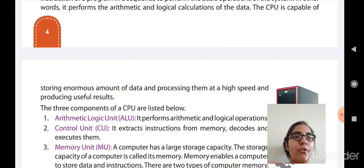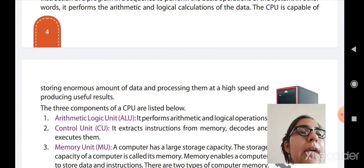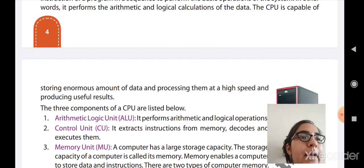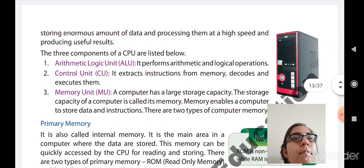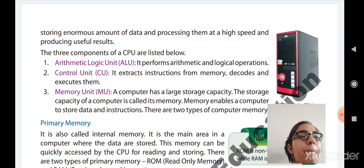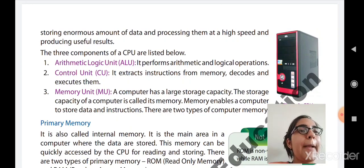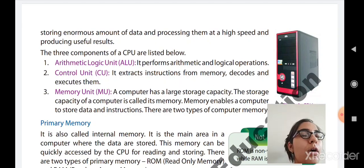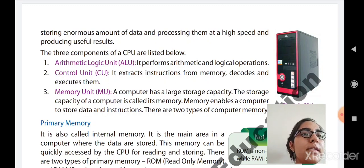Now we move to the components of CPU. The CPU has three components. The first is ALU — the Arithmetic and Logic Unit — which performs arithmetic and logical operations. Arithmetic operations include addition, subtraction, multiplication, and division. Logical operations include OR and true-or-false conditions.